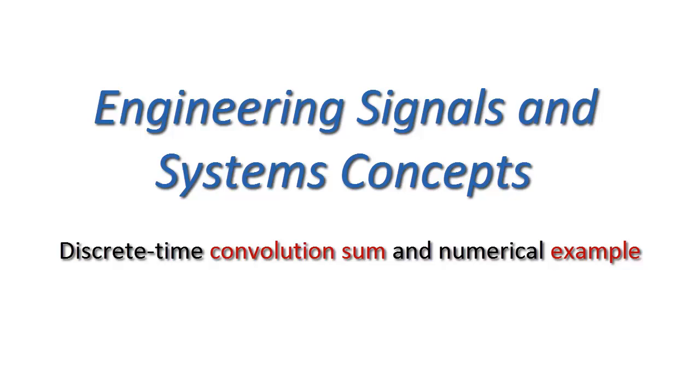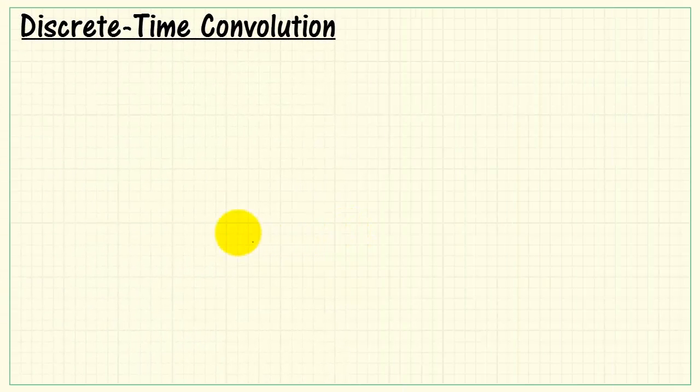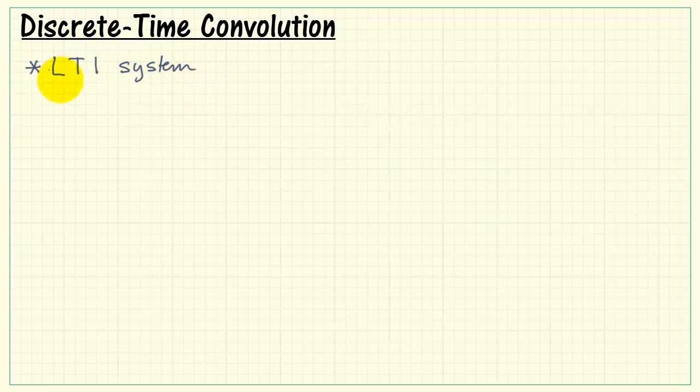Let's learn about the discrete time convolution sum and also take a look at a numerical example. Discrete time convolution applies to LTI systems. LTI is an abbreviation for Linear Time Invariant Systems.